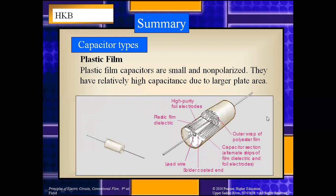The next type is the plastic film capacitor. Plastic film capacitors are small and non-polarized, and have relatively high capacitance due to their large plate area. The capacitance formula is C = εA/d, so capacitance is directly proportional to area A. Since the plates are larger, the area is greater and hence the capacitance of the plastic film capacitor is high.